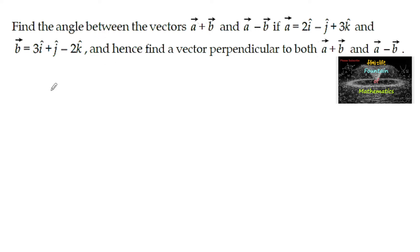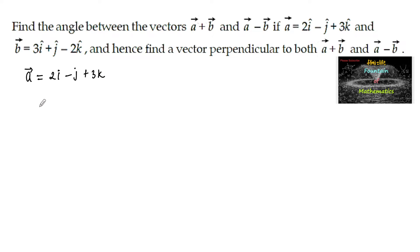Find the angle between the vectors a plus b and a minus b, where vector a is equal to 2i minus j plus 3k and vector b is equal to 3i plus j minus 2k.